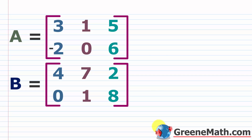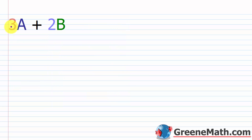Now let's look at a combination of things we've learned. In this section on scalar multiplication, problems often combine scalar multiplication with addition and subtraction. Suppose matrix A has first row three, one, and five, and second row negative two, zero, and six. Matrix B has first row four, seven, and two, and second row zero, one, and eight. Each is a two by three matrix. Our problem is to find three A plus two B.